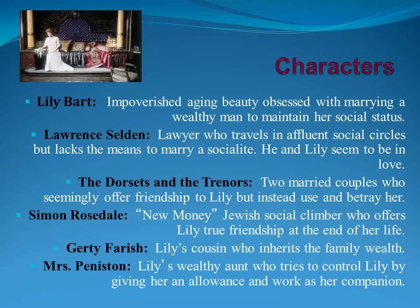The Dorsets and the Trinners are two married couples who seem to offer friendship to Lily, but instead use and betray her. For example, Bertha invites her on a Mediterranean cruise on their yacht, but only to conceal an affair she's having with Ned Silverton. When that doesn't work out for Bertha, she dismisses Lily and tells her she can't go back on the yacht. That's a financial crisis for Lily because her Aunt Edith isn't giving her enough money to keep up with her social circle—people who aren't really friends, but who offer Lily a chance to be seen.